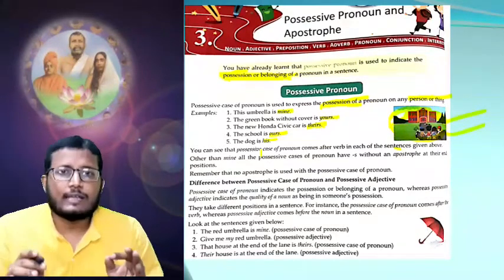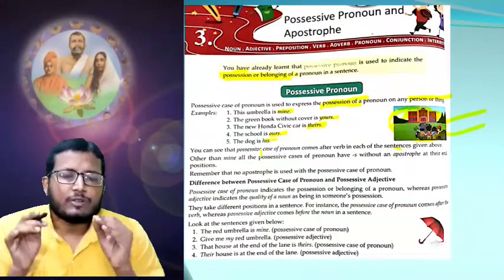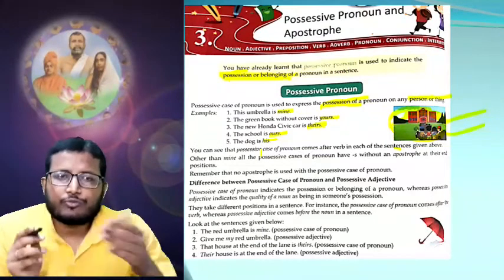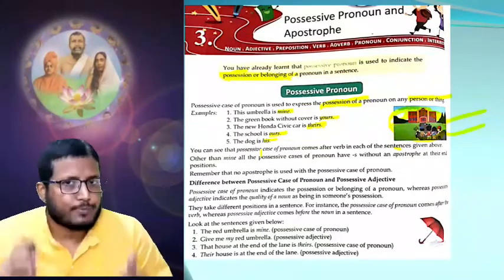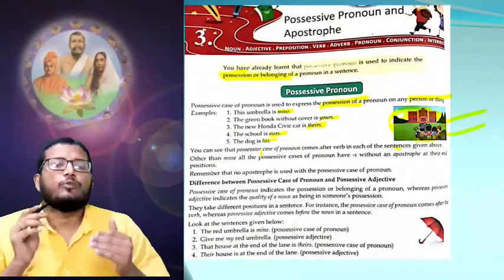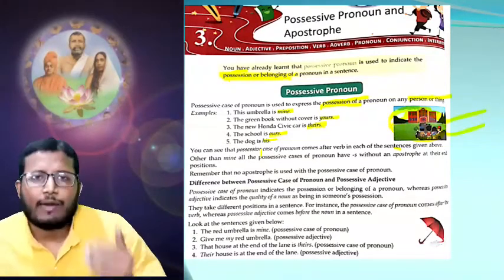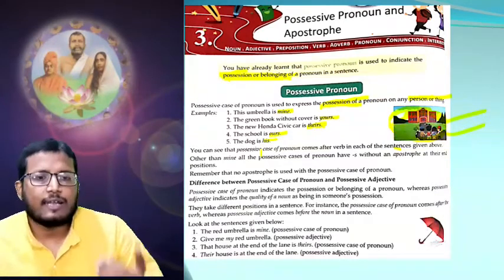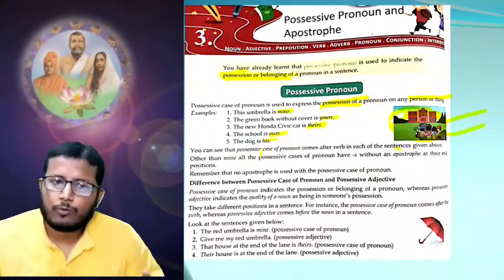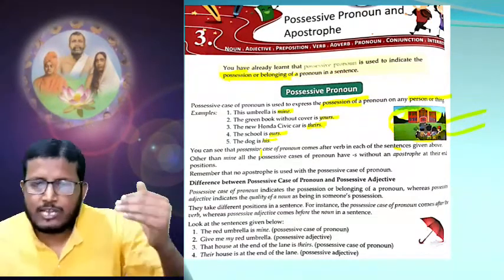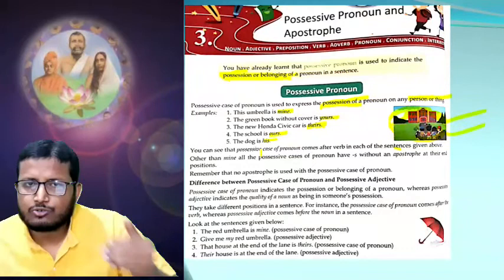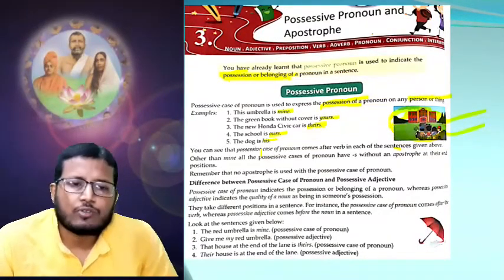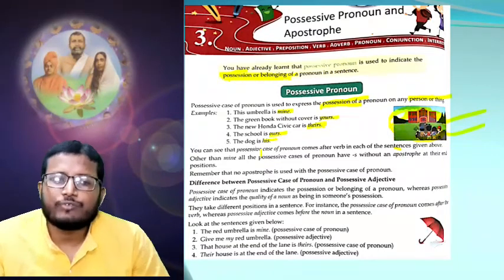Both endings depend on their own rules — the rules and contradictions I will discuss with you. So first we came to know about possessive pronouns and what they are. Then we saw five examples: mine, yours, theirs, ours, his. After this, follow: you can see that the possessive case of pronoun comes after the verb in each of the sentences given above.